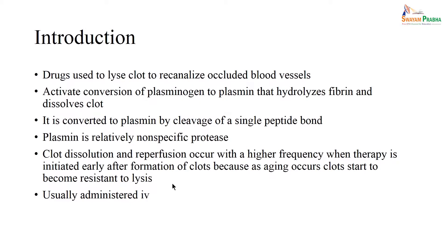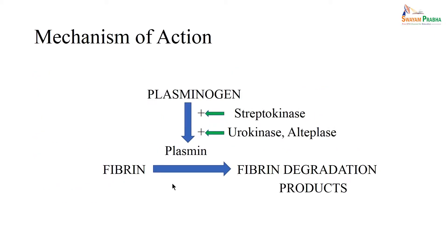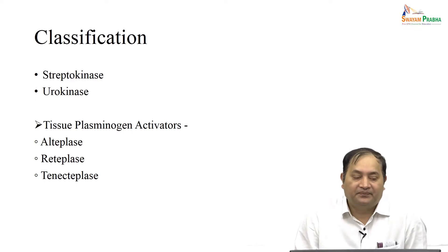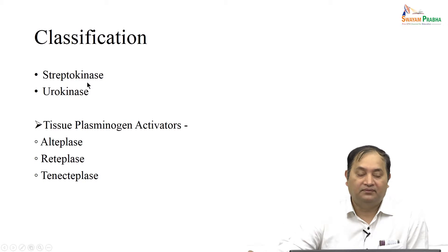Basically you try to lyse the clot and recanalize occluded blood vessels — for example in stroke or in MI in coronary arteries. Looking at the mechanism of action, plasminogen is converted to plasmin. You have various drugs like streptokinase, urokinase, or tPA — tissue plasminogen activator. These drugs cause degradation of fibrin and fibrin degradation products. You can classify thrombolytics as streptokinase (older), urokinase, and newer ones like tPA — alteplase, reteplase, or tenecteplase.